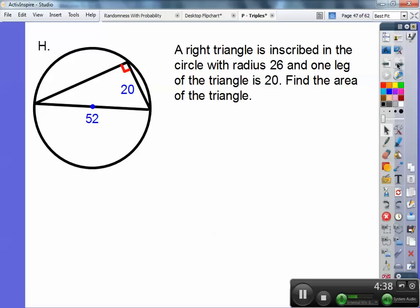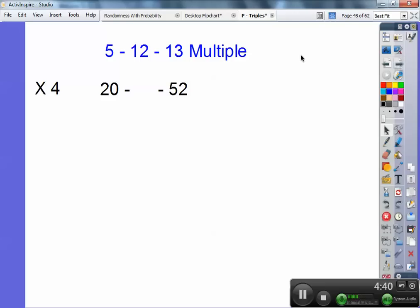And it's kind of hard to see this one, but 20 and 52, those two lengths were multiples of 5, 12, 13. 5 times 4 is 20. 13 times 4 is 52. So 12 times 4 is 48.